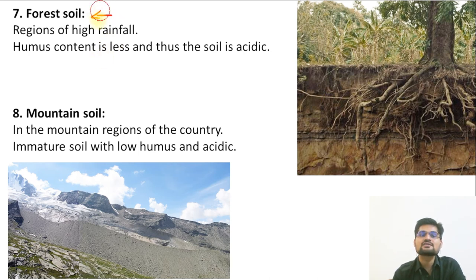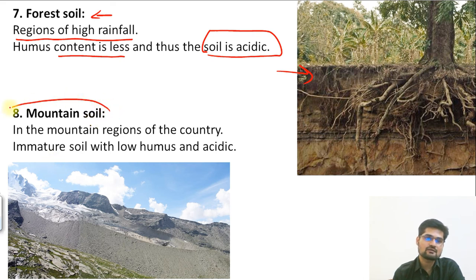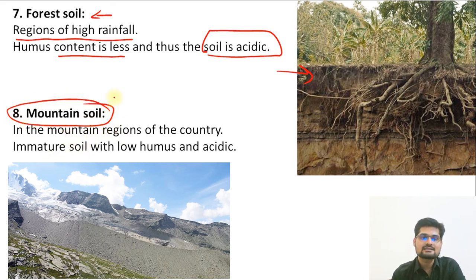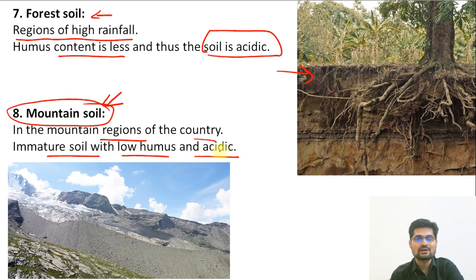The seventh type is forest soil, found in regions of high rainfall. Humus content is less and the soil is acidic. The eighth and final category in this ICAR classification is mountain soil, found in the mountain regions of the country. These soils are immature in nature with low humus and acidity.